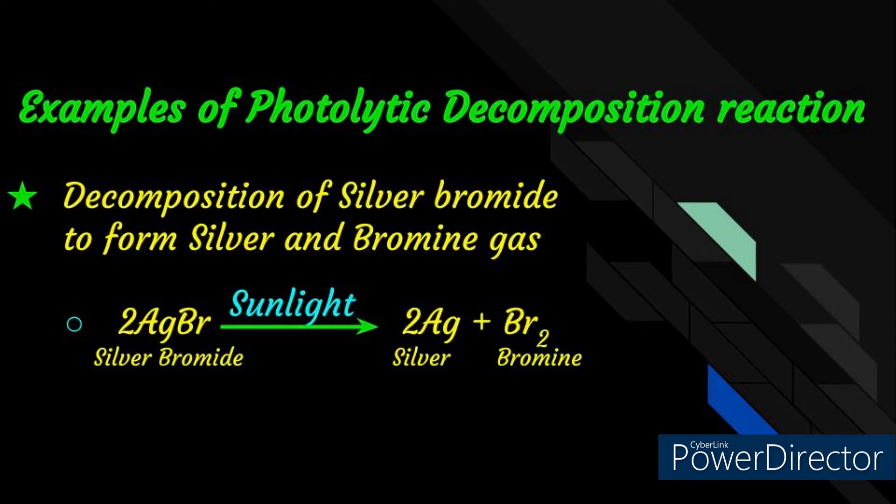The other example of photolytic decomposition reaction is silver bromide decomposes in the presence of sunlight to form silver and bromine gas. The equation for this is 2AgBr in the presence of sunlight gives rise to 2Ag plus Br2. Silver chloride and silver bromide reactions are used in black and white photography. In this reaction, energy is absorbed, and this is known as an endothermic reaction.